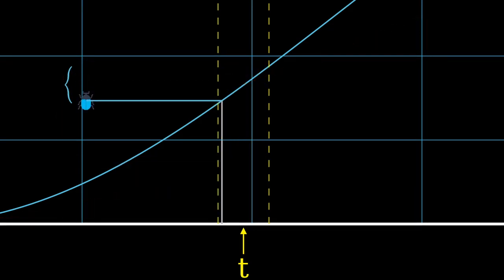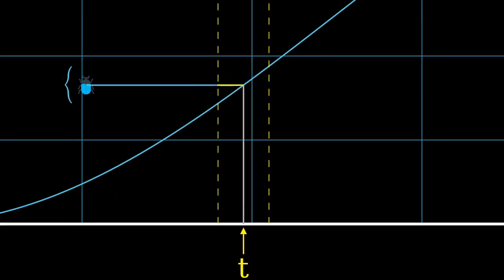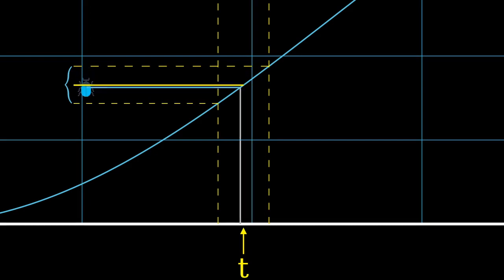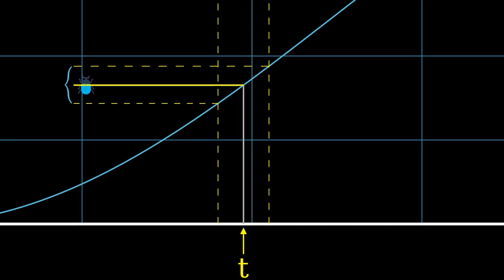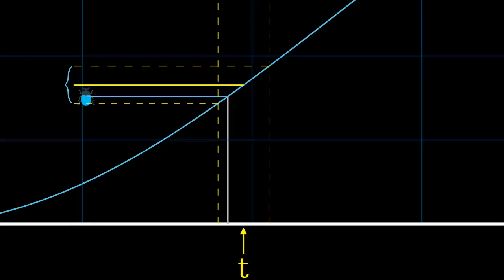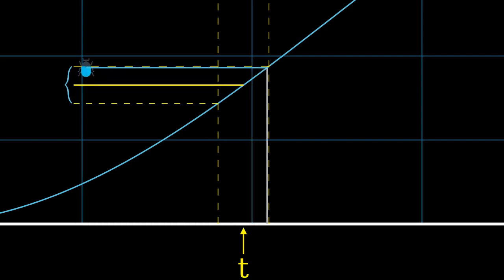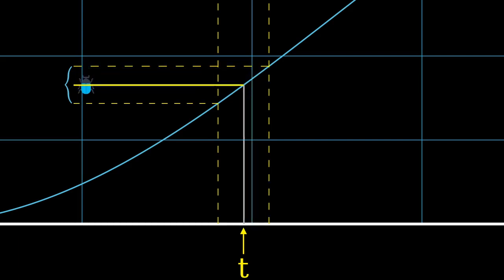If we want to keep the blue beetle within a certain distance of its position at time t, we only have to look at points in time close enough to t. In other words, any point in time close enough to t will guarantee that the blue beetle is close to its position at time t.